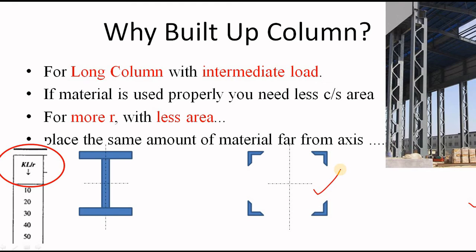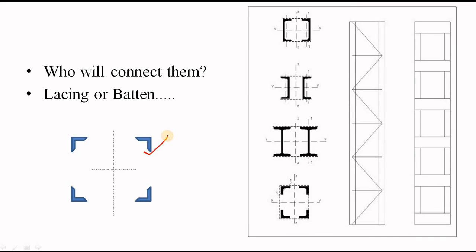Now, you have placed the component of your built-up column at the desired place. Now, who will connect them or who will keep them in place when they will be loaded? Yes, you know that lacing or batten is used for connecting them. Here you can see that this four angle has been connected in all four sides. In the plan, this looks like this.